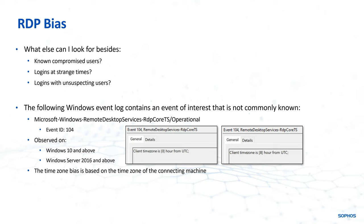This event is available in the Microsoft Windows Remote Desktop Services RDP Core TS Operational Event Log and it's Event ID 104.